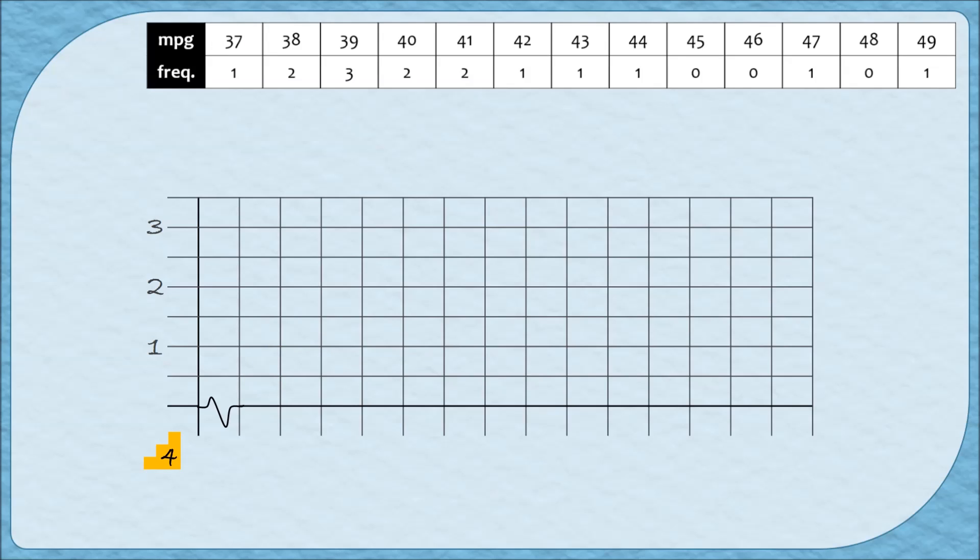Step four is to now label our horizontal axis. The way that we're going to label the horizontal axis for ungrouped data is just by labeling each of the categories like we would for a vertical axis. In this case, I'm going to start on the line after the break and then I'm going to label each of the lines that follow in sequence. So I'm labeling the values from 37 all the way up to our last category of 49.